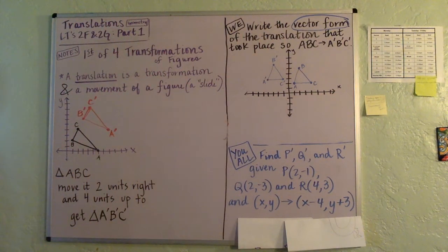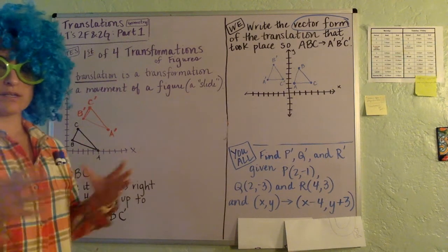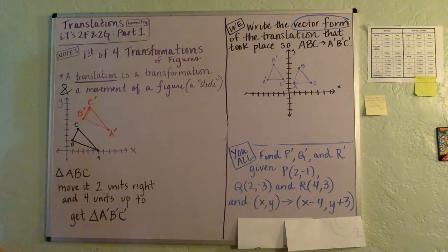It looks like we're going to be talking about translations, learning targets 2F and 2G. This is part one of four.